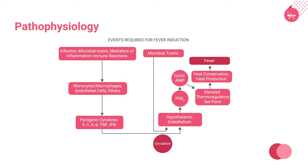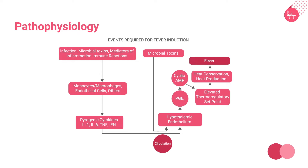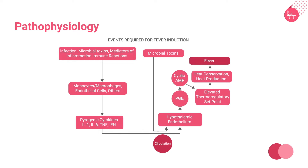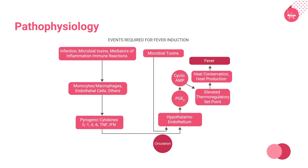These pyrogens are transmitted to the hypothalamic thermoregulatory center, specifically to the organum vasculosum of the lamina terminalis (OVLT), where they induce synthesis of prostaglandins, of which PGE2 is the most significant. These prostaglandins raise the thermostatic setpoint to initiate the febrile response.